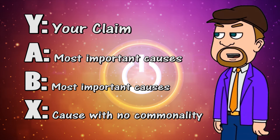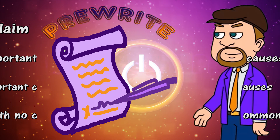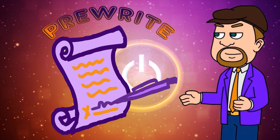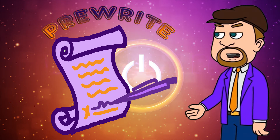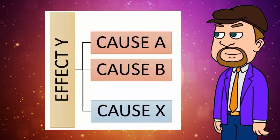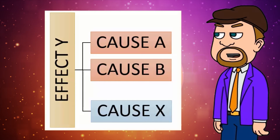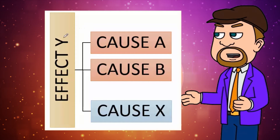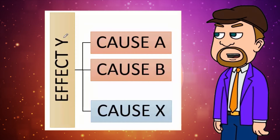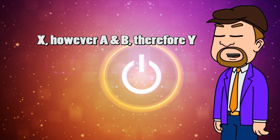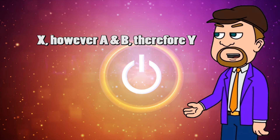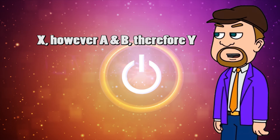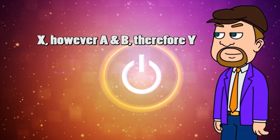How do you arrive at all these things? By pre-writing. For a cause and effect essay, your pre-writing takes a simple form. Once you have your pre-writing done, you can construct your HOTS thesis sentence using the X, however A and B, therefore Y formula. Your pre-writing also gives you a great outline for your essay as well.